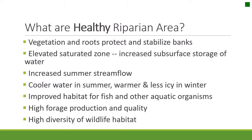Healthy riparian areas are those that have lots of vegetation with good root mass that helps protect and stabilize the banks. This allows the stream to remain sinuous and ensures it doesn't cut straight through an area. They also have elevated saturation zones, which not only increase subsurface storage of water, but also allow for filtration and serve as a buffer for fertilizers that might make their way from farmlands.